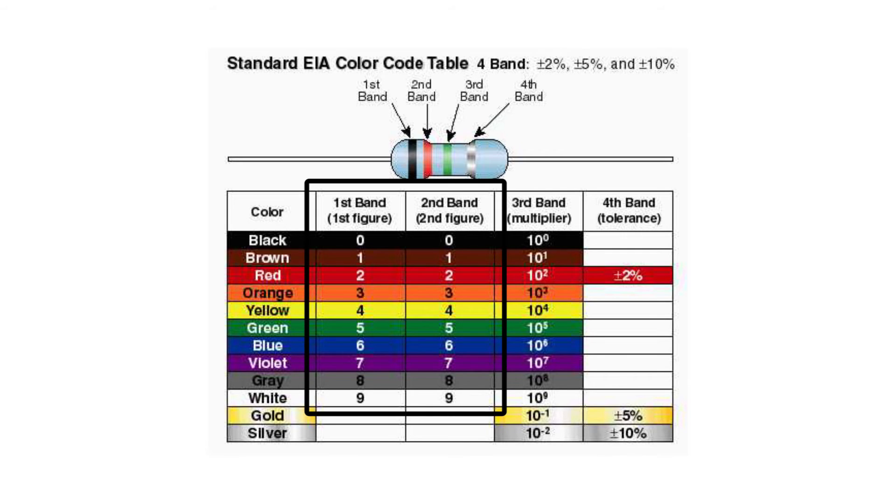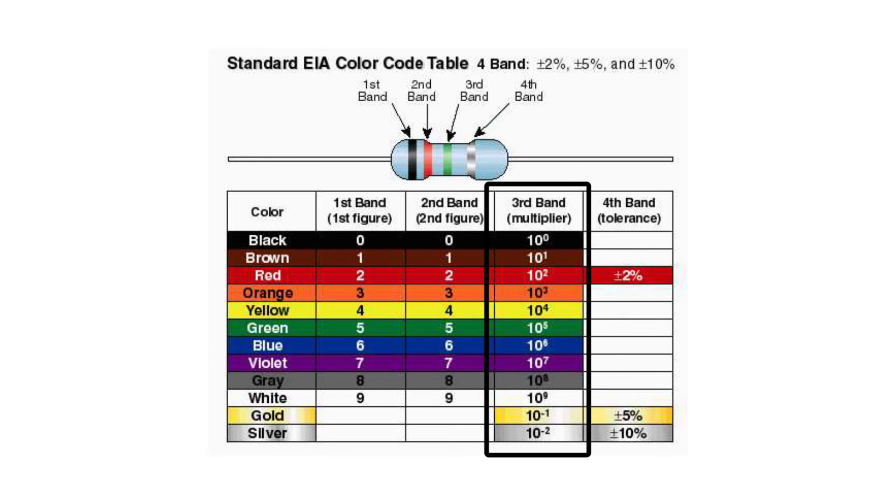The first 2 bands represent the first 2 digits in the resistance value. And it's coded according to this colored chart. With black representing 0, brown 1, red 2, so on up through white which is 9. The third band tells us the multiplier or how many zeros to put after the number we've just come up with.